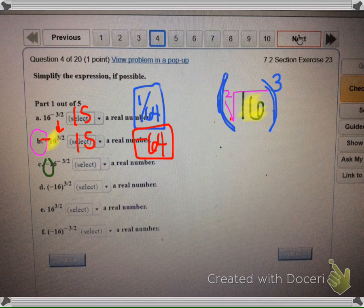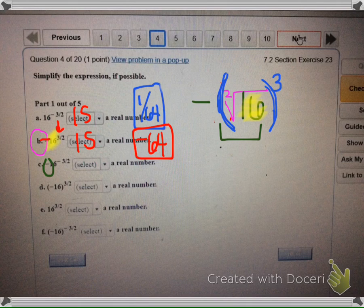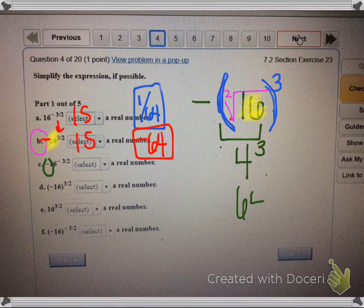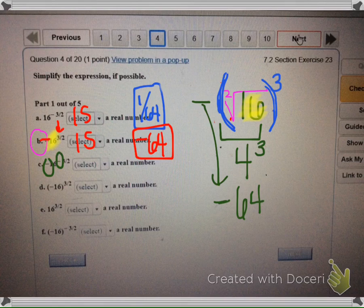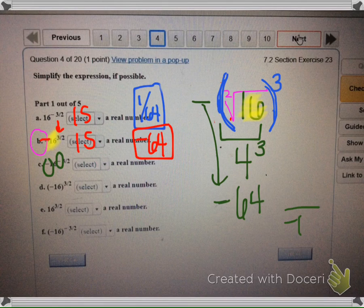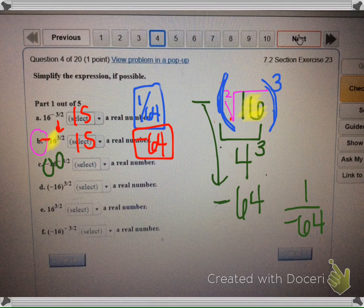This next one says there's a negative on the outside again, and then it has a negative exponent, so that just means the answer moved to the denominator. Here we're going to get the square root of 16, which is 4. 4 to the third power is 64, bring down the negative, but because the exponent was negative, we know that this is going to go to the denominator. So this is a real number, negative 1 over 64.